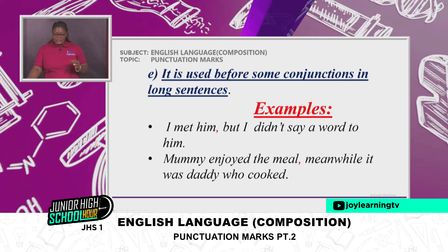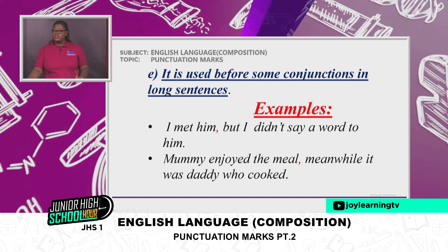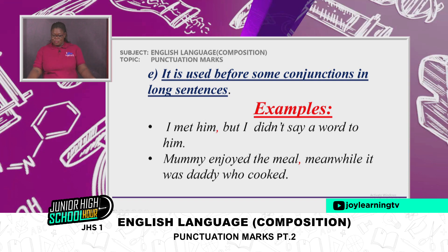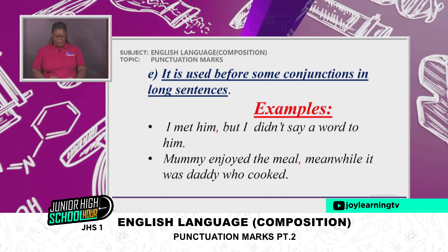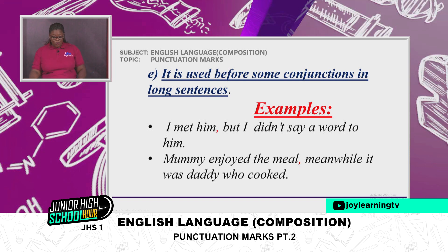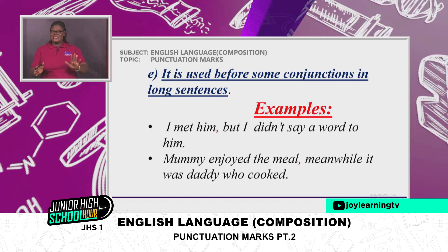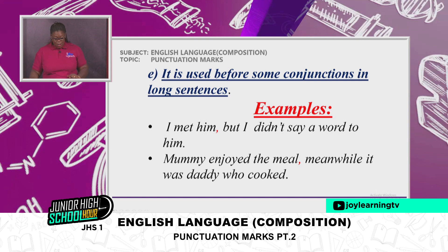The comma is used before some conjunctions in long sentences. Examples: 'I met him, but I didn't say a word to him.' 'Mommy enjoyed the meal. Meanwhile, it was Daddy who cooked.' Most of the time it's Mommies who cook, but this sentence tells us that Daddy cooked this time around.